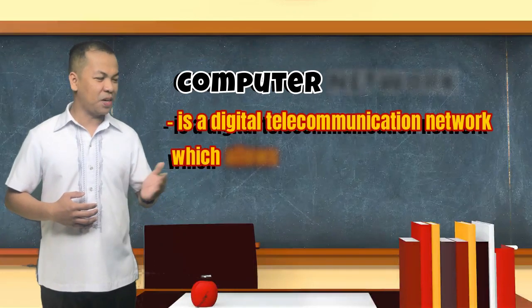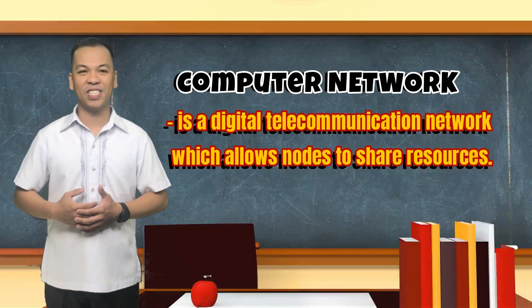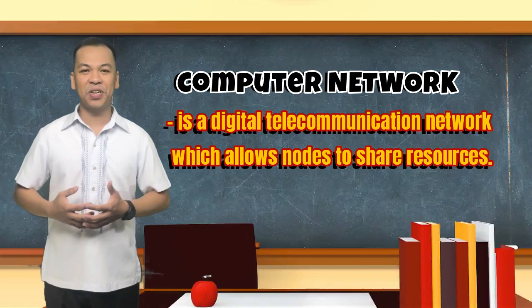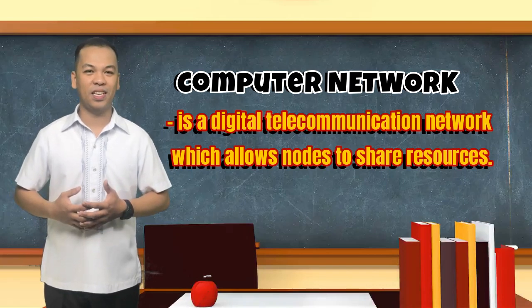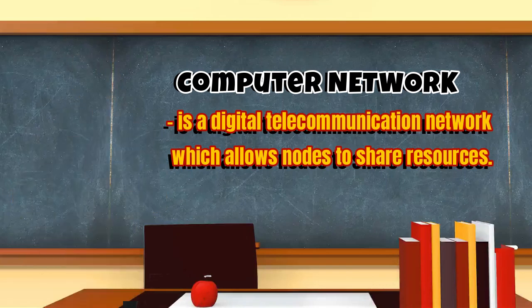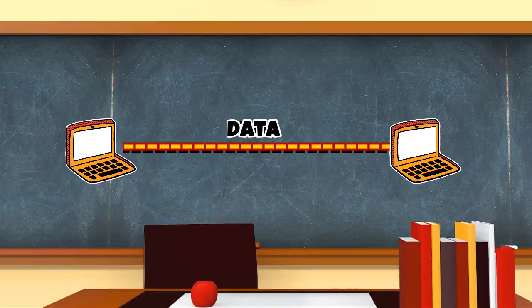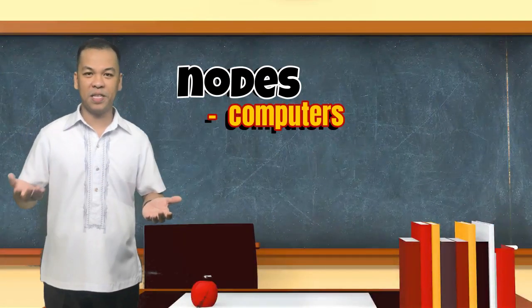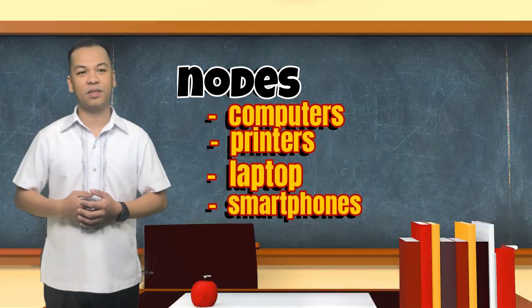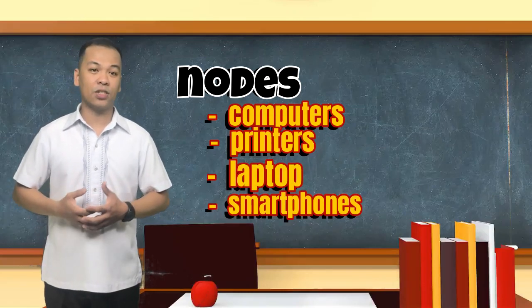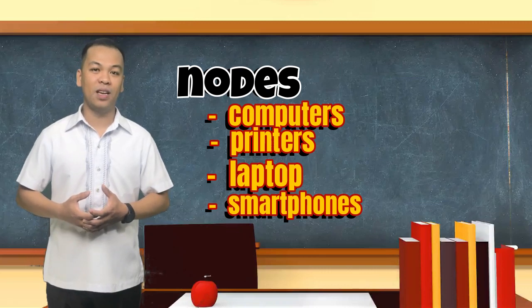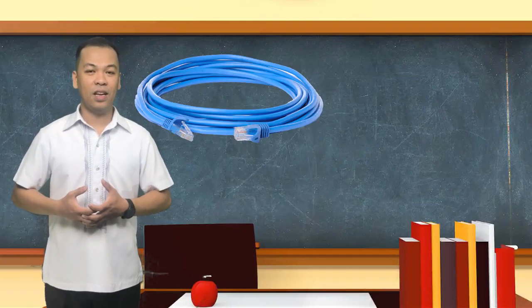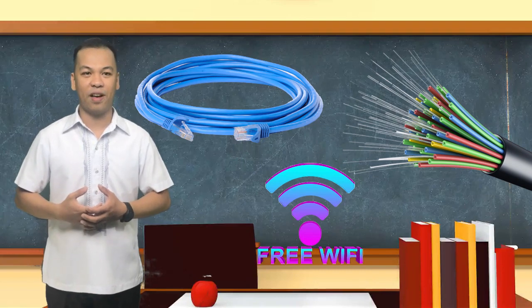Computer network, or data network, is a digital telecommunication network which allows nodes to share resources. In computer network, computing devices exchange data with each other using connections between those nodes. Nodes are devices such as computers, printers, laptops, or even smartphones. These data links are established over cable media such as wires or optic cables, or wireless media such as Wi-Fi.